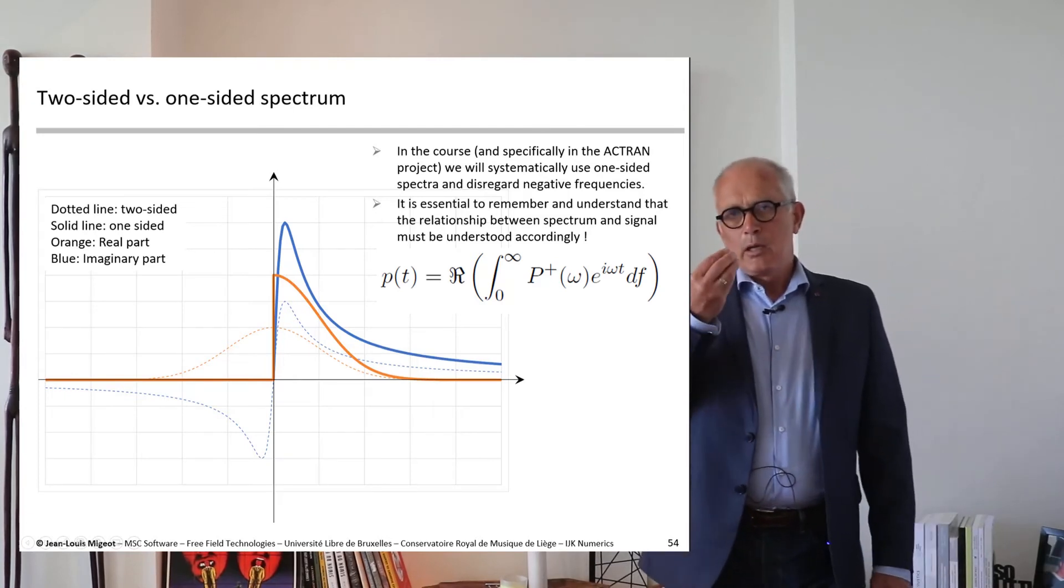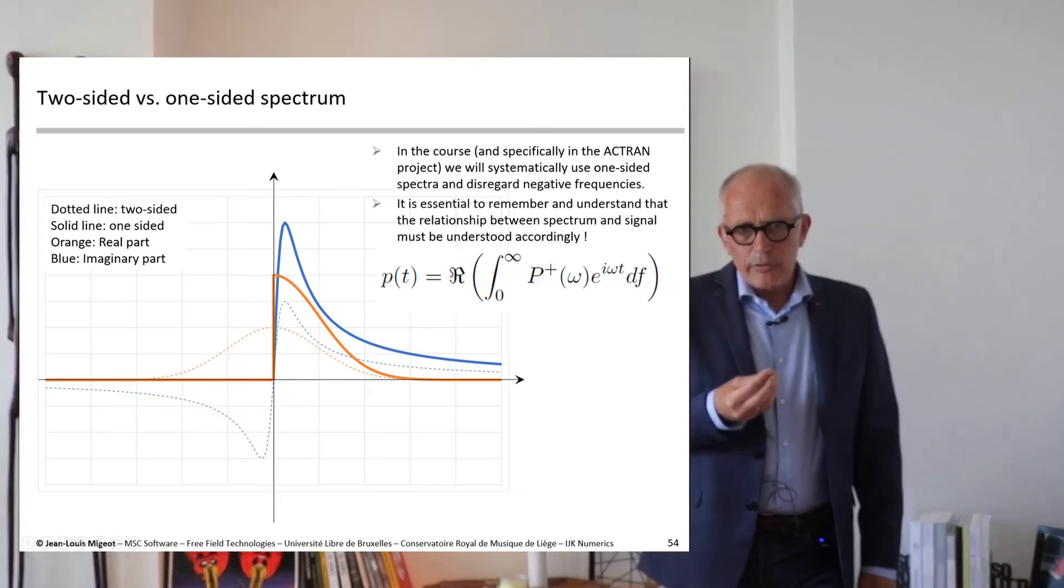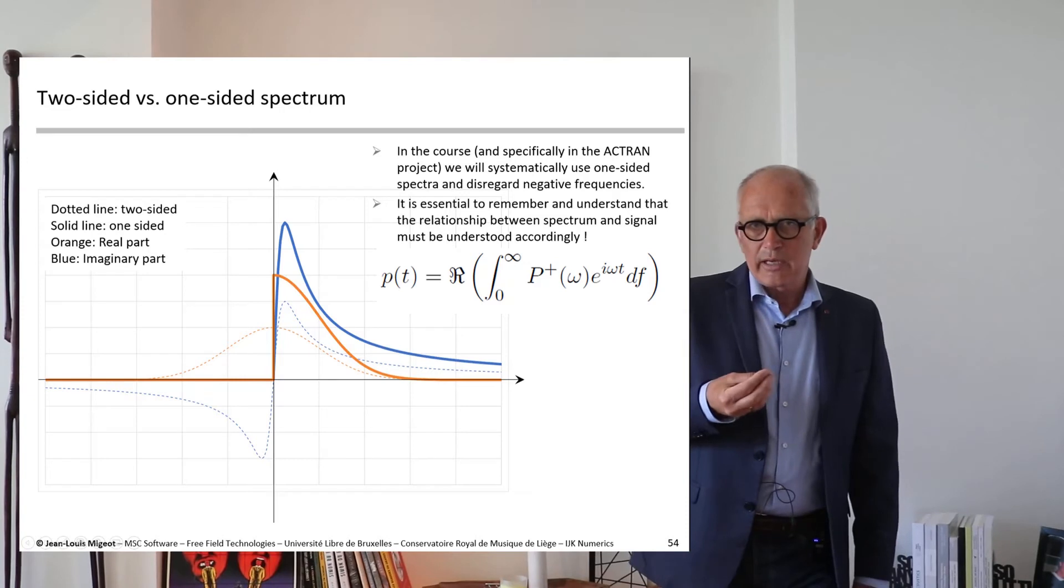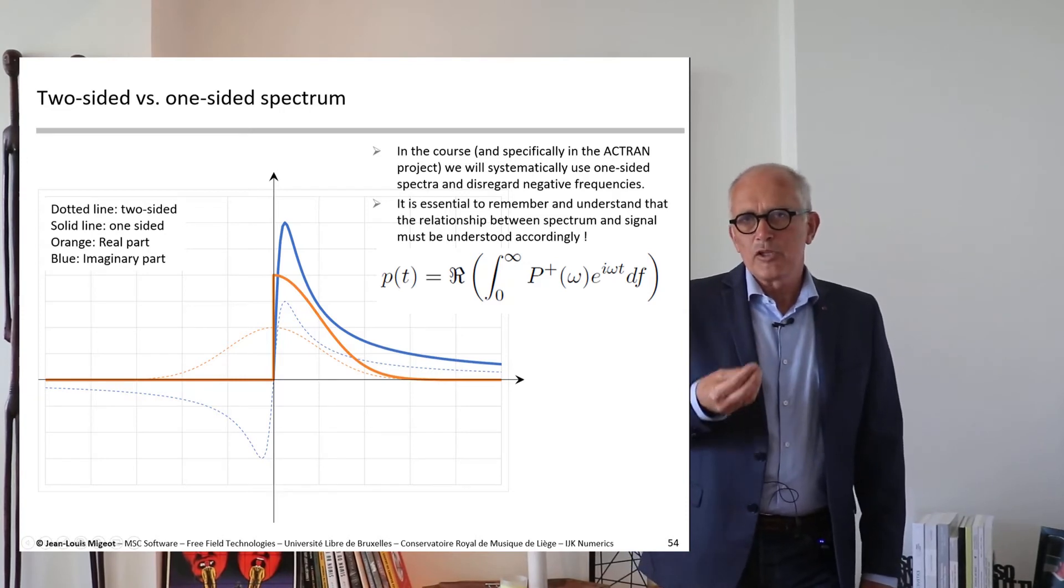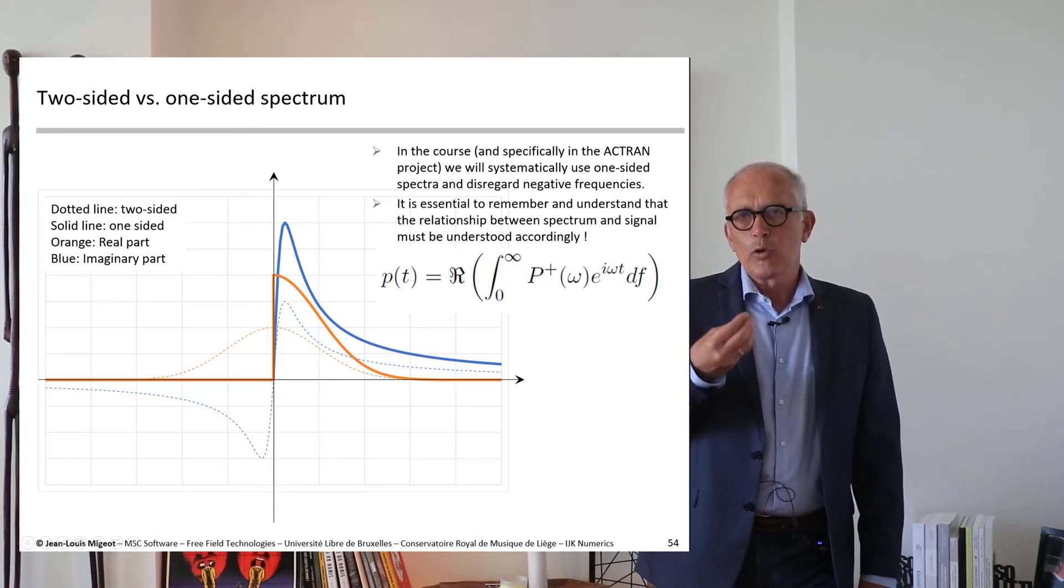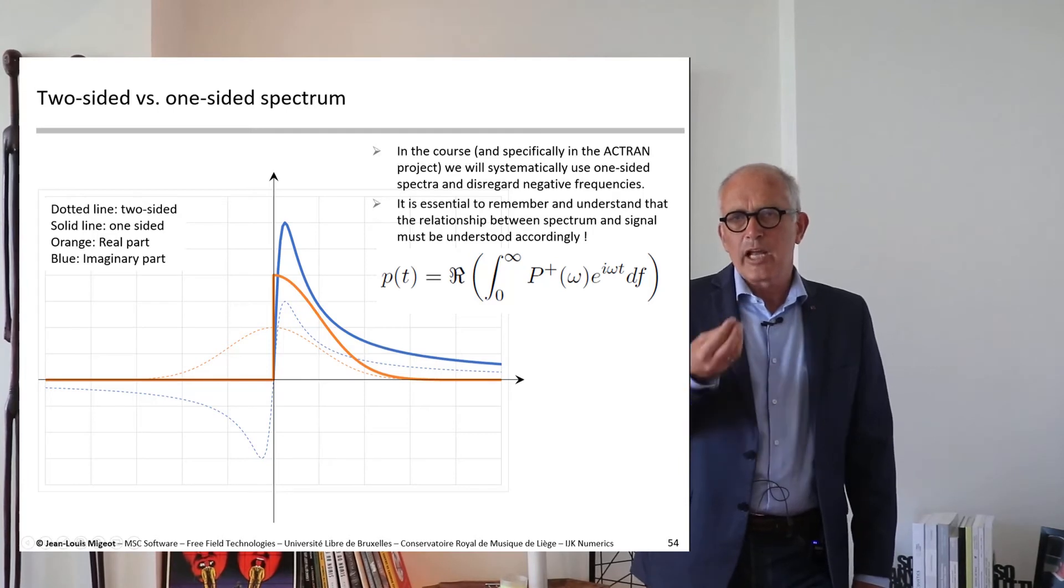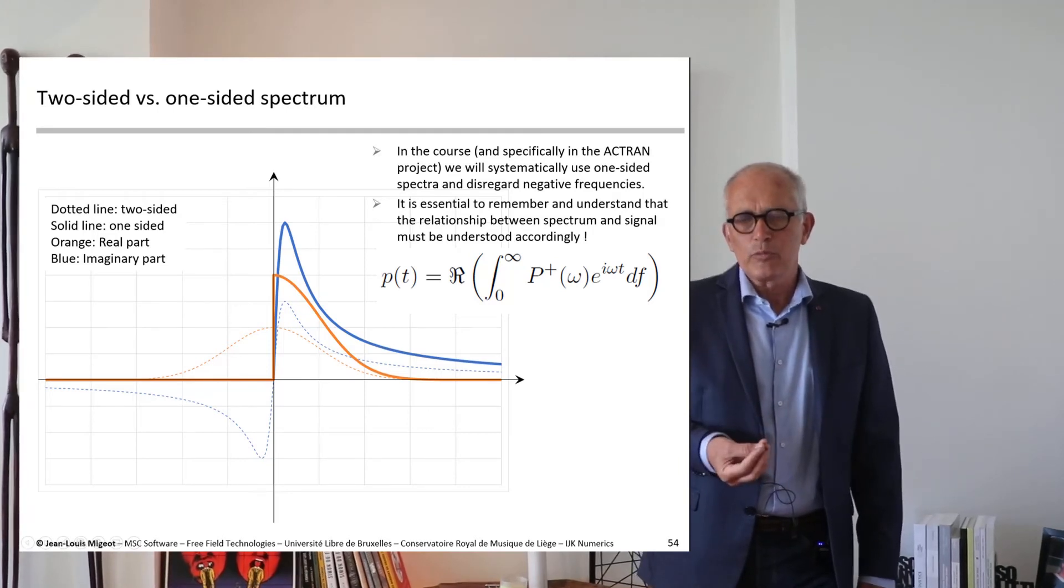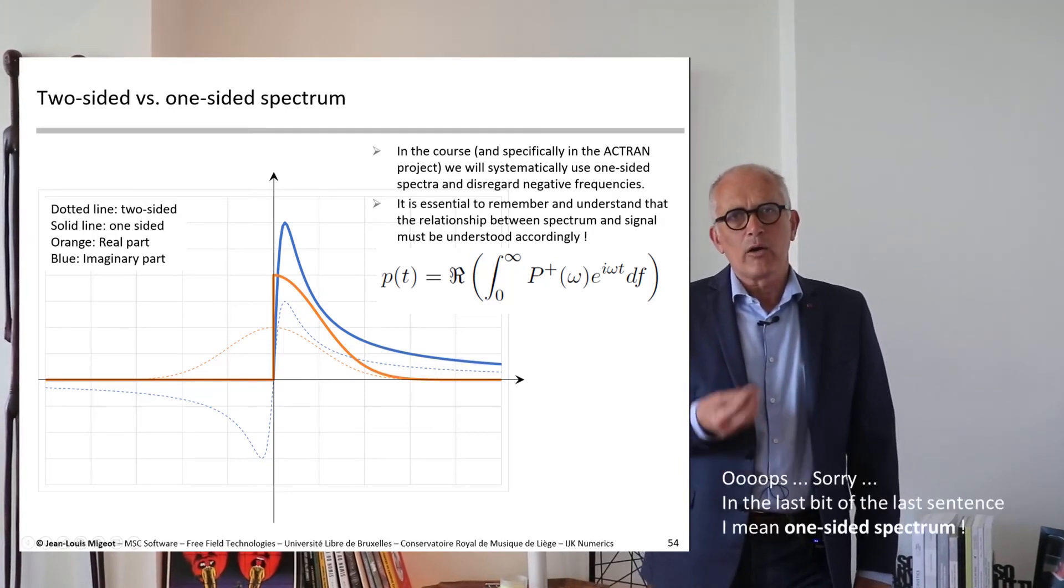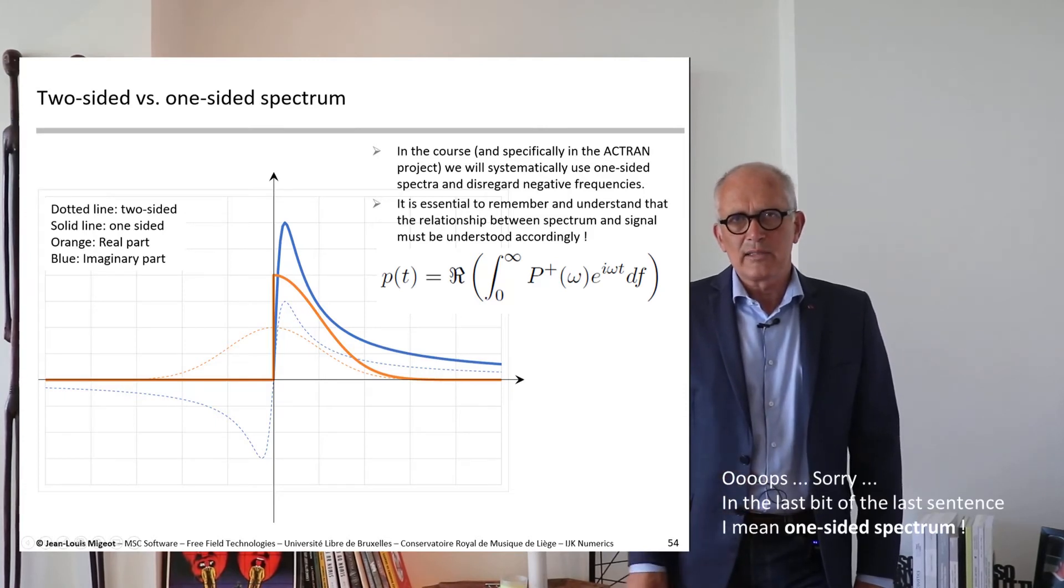So to remember, the standard Fourier spectrum is two-sided, but because the information is redundant, we don't want to store twice the information, and we work only with positive frequencies, and therefore we rely on what is called the one-sided spectrum.